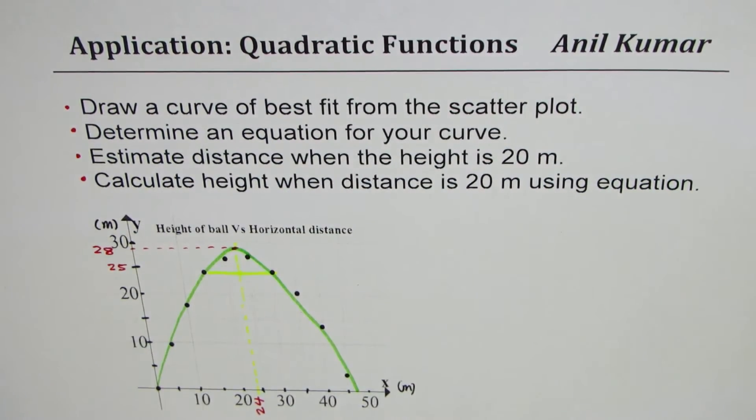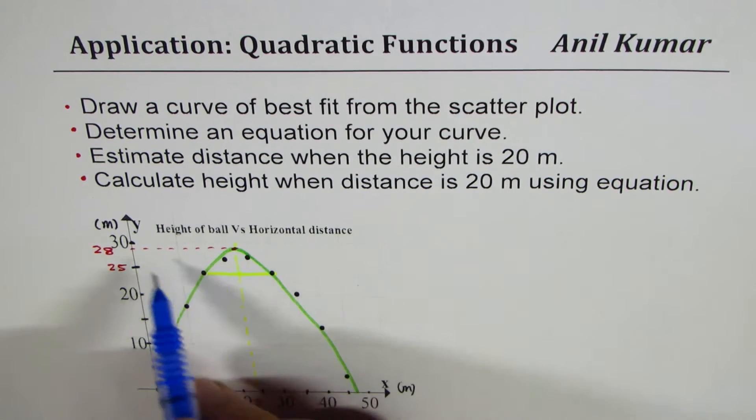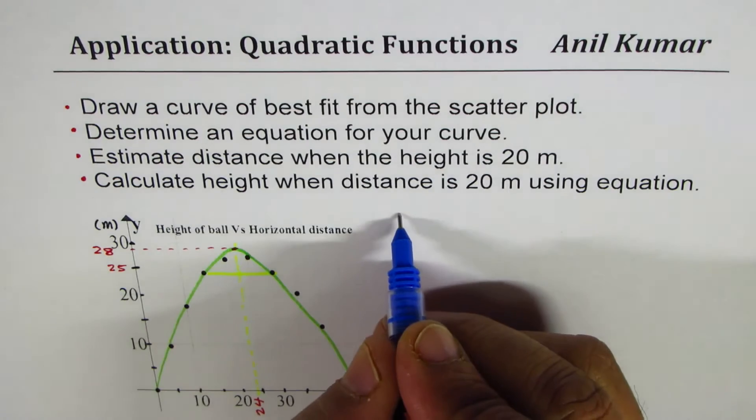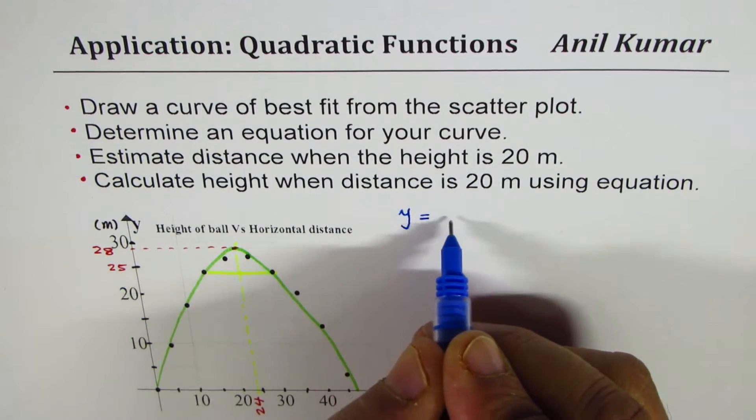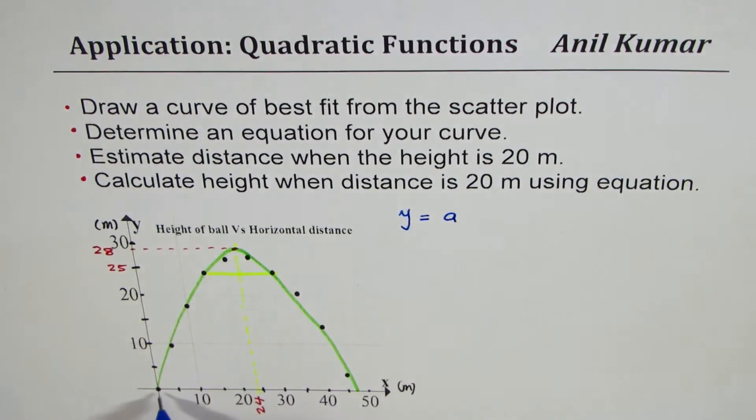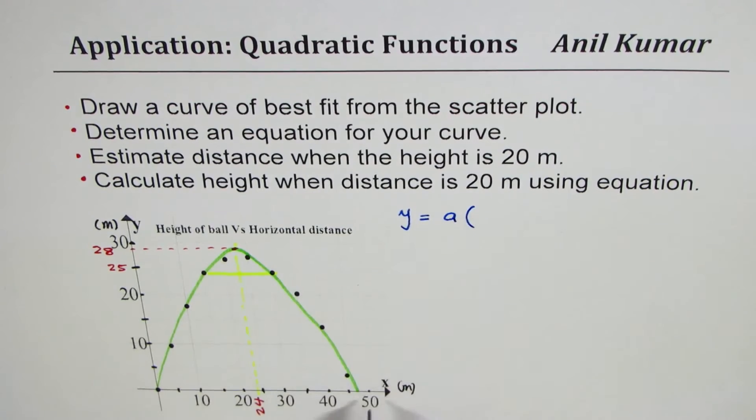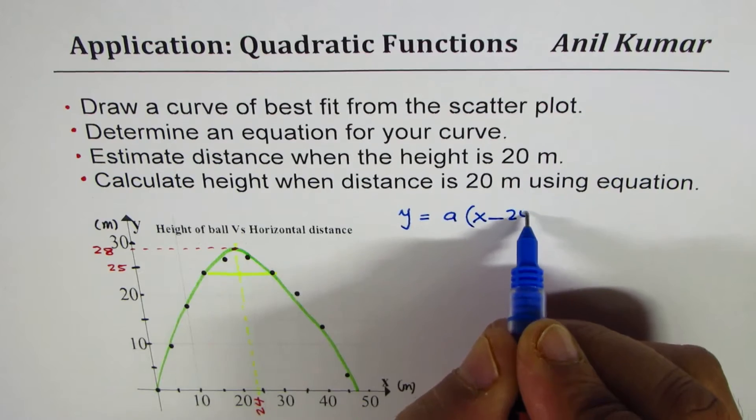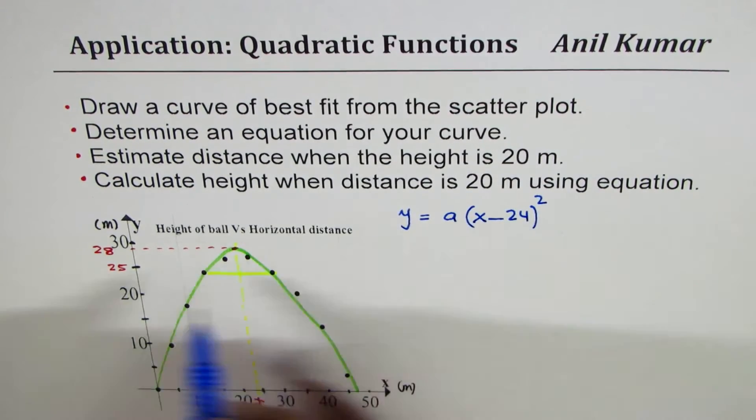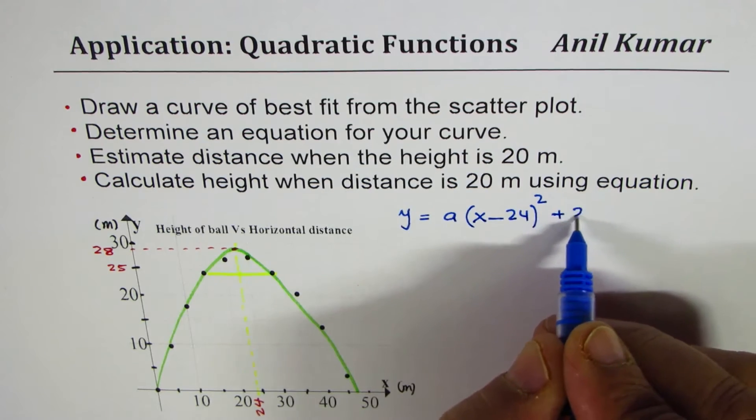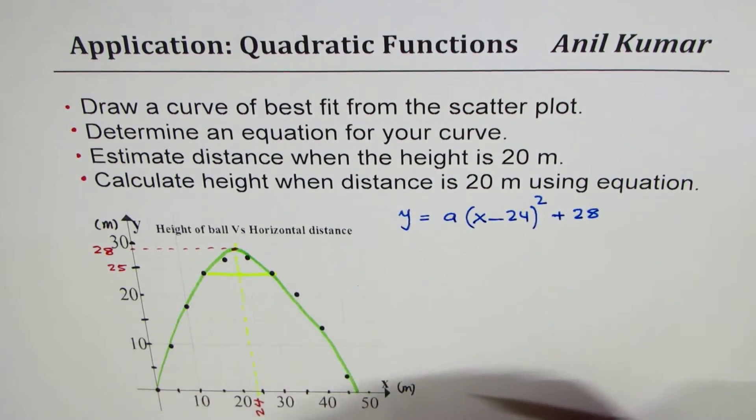Now with these two points I can write down the equation of the parabola. We can say the height which is y here is equal to a - we don't know what a is, we'll use the origin (0,0) to calculate a. We're writing in the vertex form: y = a(x - 24)² + 28. That becomes the equation for me and here we'll use the point origin (0,0) to find the value of a.